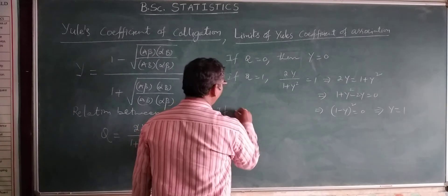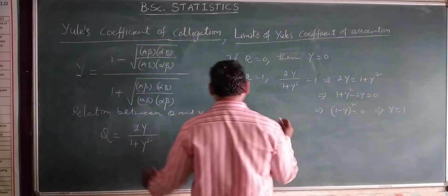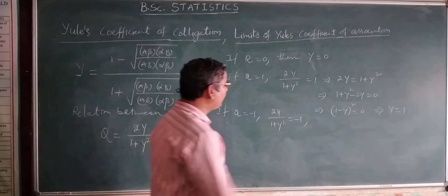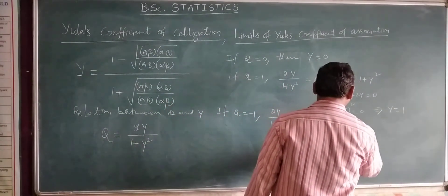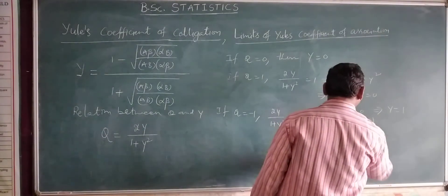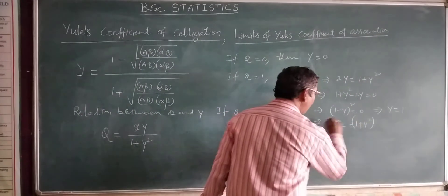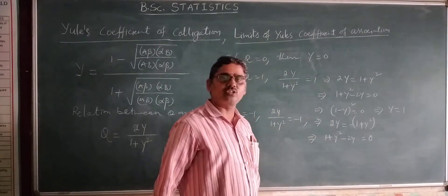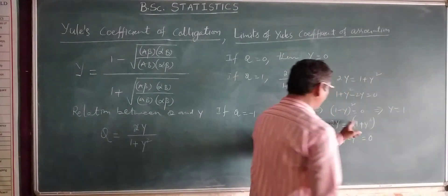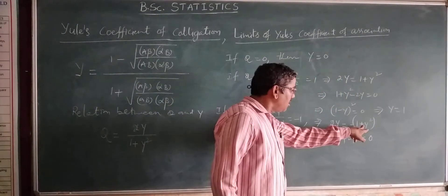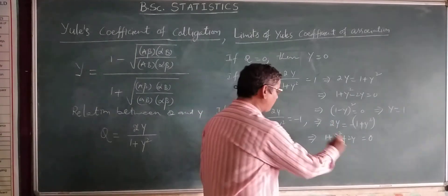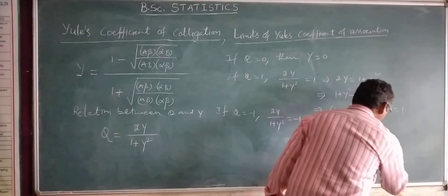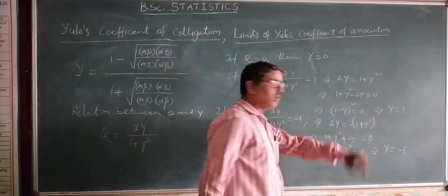If Q is equal to minus 1, substituting into the same relation gives 2Y divided by 1 plus Y squared equals minus 1. This gives 2Y equals minus of 1 plus Y squared, and rearranging: 1 plus Y squared plus 2Y equals 0, which means 1 plus Y whole squared equals 0, implying Y equals minus 1.